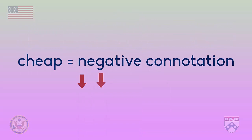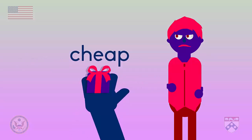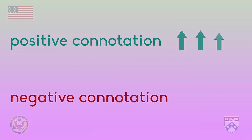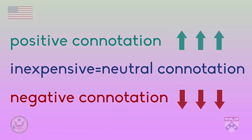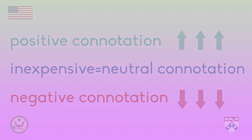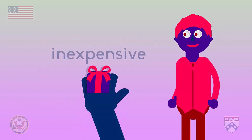Let's return to our example of cheap and inexpensive to see how word choice can change how we say something. Cheap has a negative connotation — it gives the feeling of poor quality. If I tell my friend Alberta that I brought a cheap gift to her party, she might be unhappy. Inexpensive, on the other hand, has a neutral connotation. This means it's not positive or negative — it's in between. If I tell Alberta that I brought an inexpensive gift to her party, she shouldn't be unhappy at all.